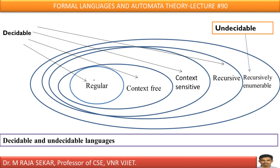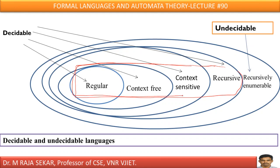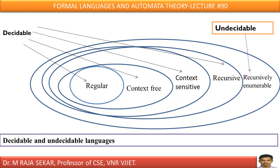Now, this is a simple diagram through which you can understand decidability and undecidability. It is a simple and straightforward diagram. From regular language to recursive language, all these languages come under decidable. But undecidability is encountered only in the case of recursively enumerable language, because of that infinite loop. So, recursively enumerable language comes under the undecidable category.